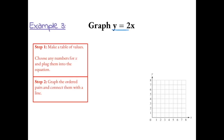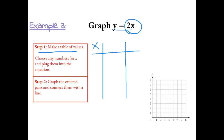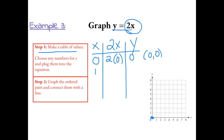To graph any equation, the first step is to make a table of values. We can choose any values we want for our input and use the function rule or the equation 2x to find our output. Plugging in 0: 2 times 0 equals 0, so our first ordered pair is (0, 0), which is the origin. Next, plugging in 1: 2 times 1 gives us an output value of 2, so our next ordered pair is (1, 2).